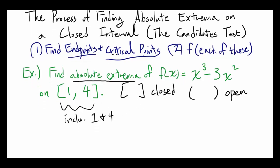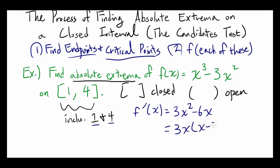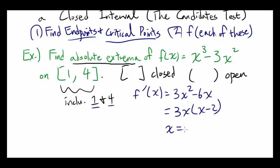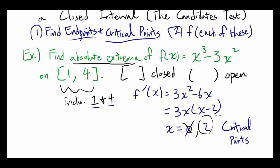First, find the endpoints and critical points. The endpoints are 1 and 4. Critical points occur when f'(x) = 0 or undefined. Finding f'(x) gives 3x² - 6x, and factoring out 3x gives 3x(x - 2). This equals zero when x = 0 or x = 2. This is never undefined, so those are the critical points. We only care about critical numbers between 1 and 4, so we ignore 0 and keep x = 2.